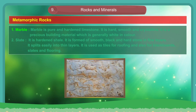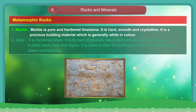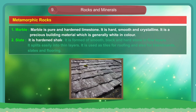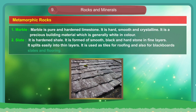1. Marble. Marble is pure and hardened limestone. It is hard, smooth and crystalline. It is a precious building material which is generally white in color. 2. Slate. It is hardened shale. It is formed of smooth black and hard stone in fine layers. It splits easily into thin layers. It is used as tiles for roofing and also for blackboards, slates and flooring.